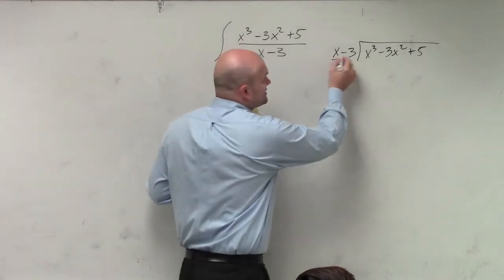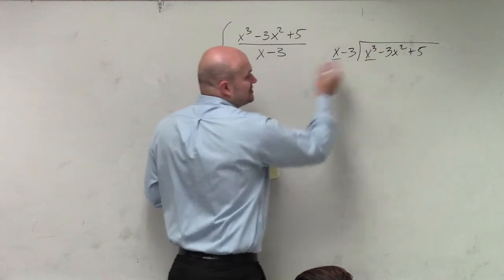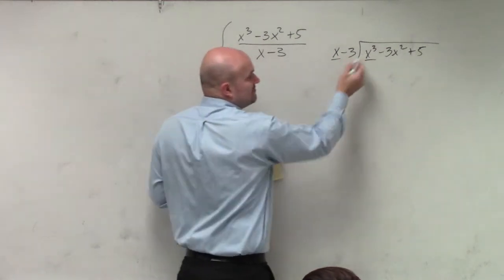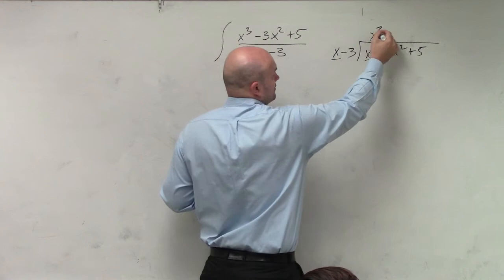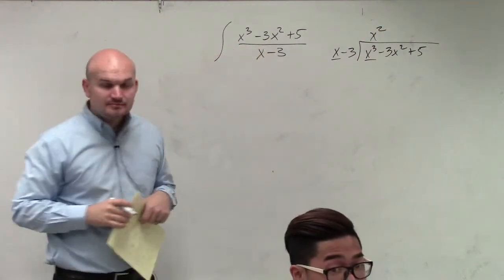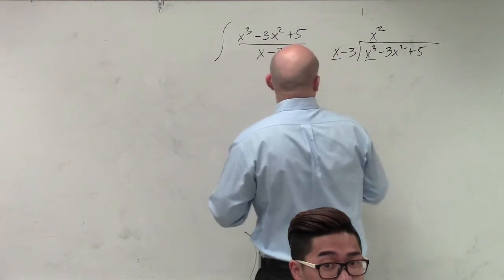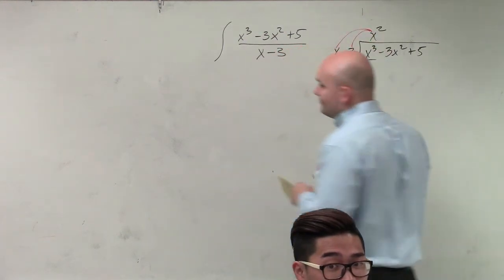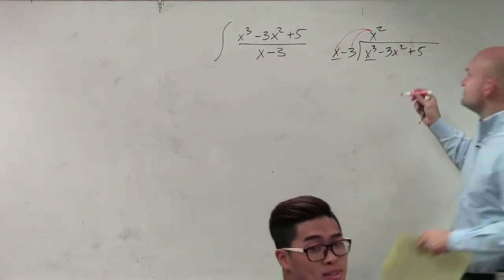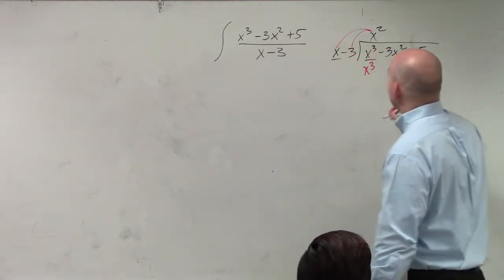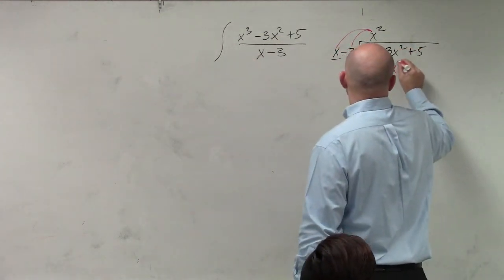What you're going to do is you're going to take your first term, divide it into the first term of your radicand, x divided into x cubed, x squared times. Then we're going to take x squared, and you're going to multiply x squared times both terms of your divisor. x squared times x is going to be x cubed. x squared times negative 3x is a negative 3x squared.